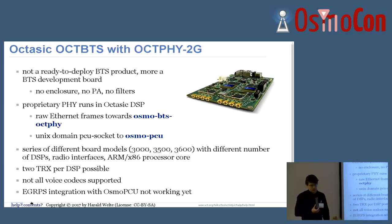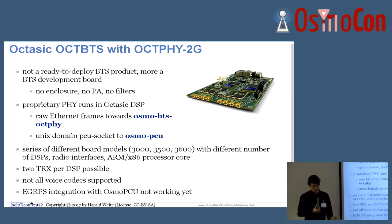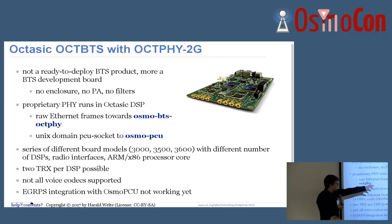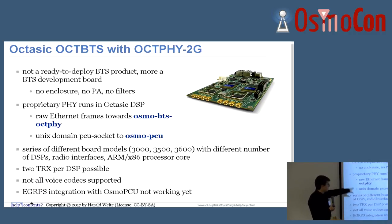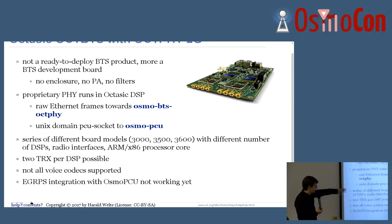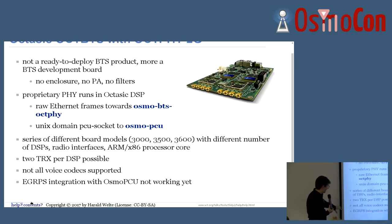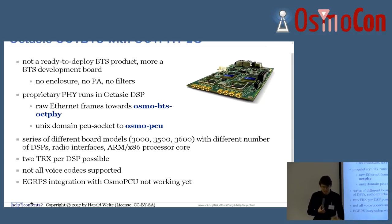There are also Octasic boards — basically various SDR boards with a proprietary physical layer running in an Octasic-specific DSP. We have a port of OsmoBTS that can run on that, called OsmoBTS-octphy. It talks over a Unix domain socket to OsmoPCU for GPRS support. There's a series of different boards with different numbers of DSPs and radio interfaces. As far as I know, eGPRS is not working yet due to some issues with the integration on the PCU side, and not all voice codecs are supported yet.